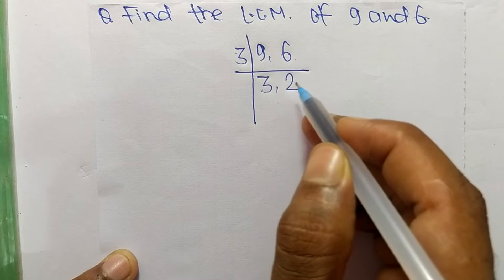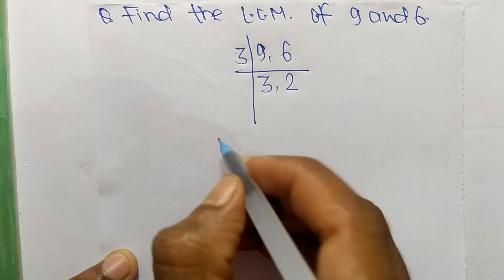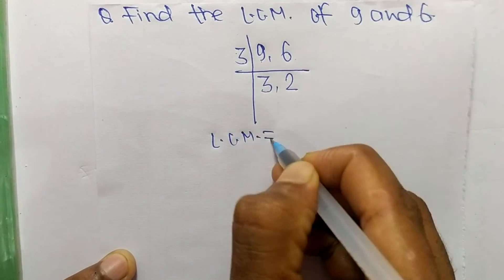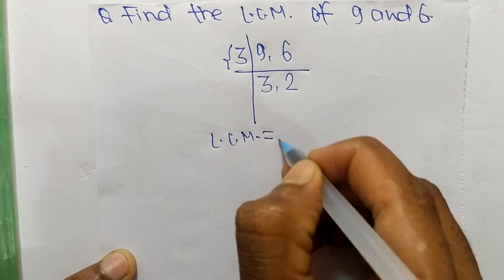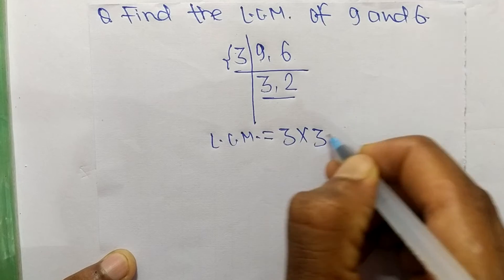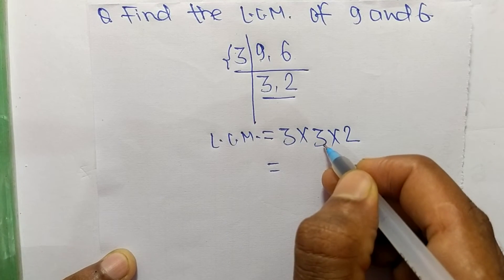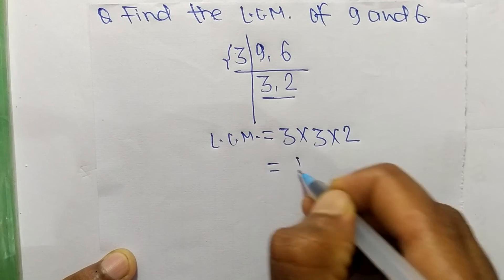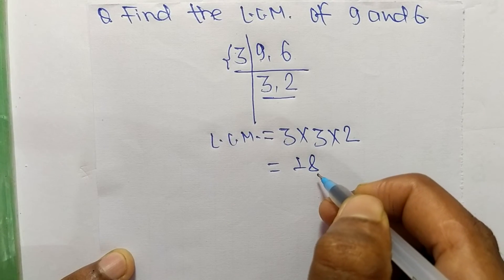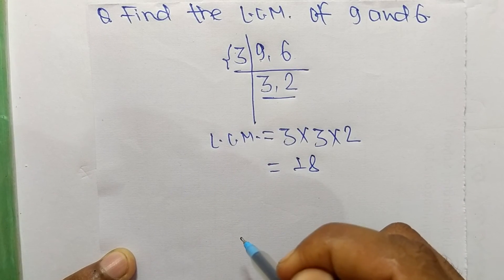And when we take 2, then it can divide 2 but can't divide 3. So now LCM is equal to, from this part it is 3, and from this part it is 3 times 2. So 3 times 3 equals 9, and 9 times 2 equals 18. So 18 is the LCM of 9 and 6.